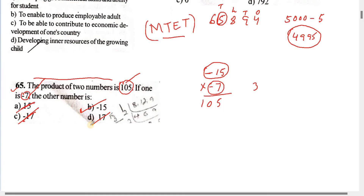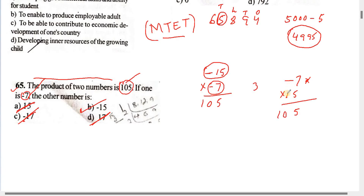Now let me explain directly. Giving 15: the two numbers here — 27 and the other number — with 15, we multiply them. With minus into plus giving minus, and minus into minus giving plus, the product is 105.